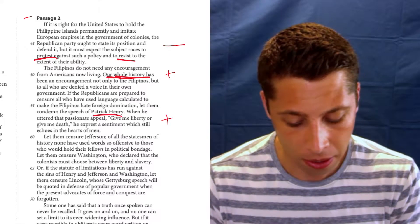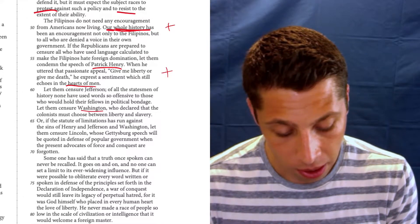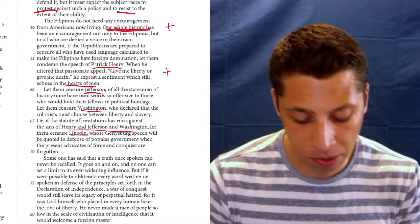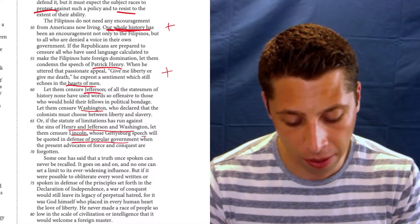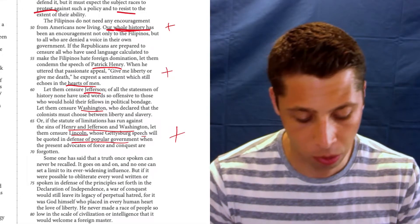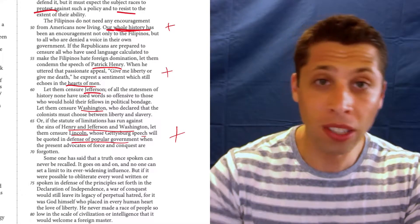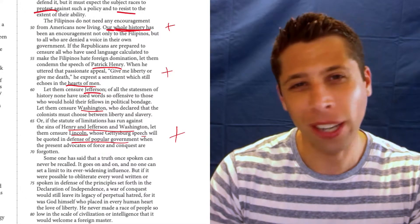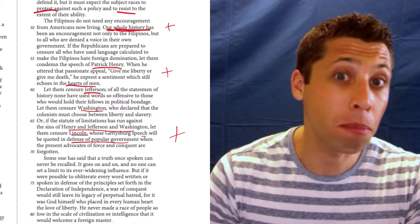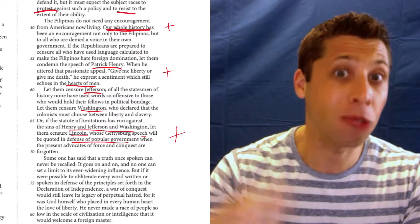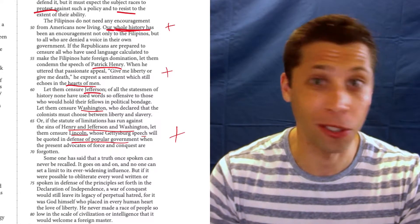If the Republicans are prepared to censure all who have used language calculated to make the Filipinos hate foreign domination, let them condemn the speech of Patrick Henry. When he uttered the passionate appeal, give me liberty or give me death, he expressed a sentiment which still echoes in the hearts of men. That seems to be positive on Henry. Let them censure Jefferson. Of all the statements of history, none have used words so offensive to those who would hold their fellows in political bondage. Let them censure Washington, Lincoln, whose Gettysburg address will be quoted in defense of popular government when the present advocates of force and conquest are forgotten. It's a lot of positive here. So, notice I'm reading, and I'm reading fast, but I'm not trying to understand every little thing. I'm looking for key ideas, repeated ideas. And it seems like he's name dropping a lot of historical figures.